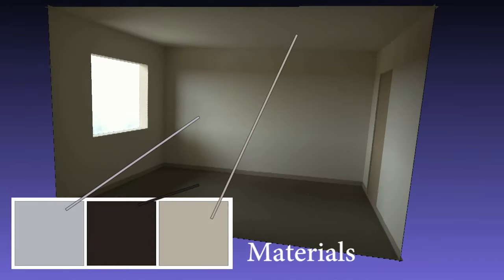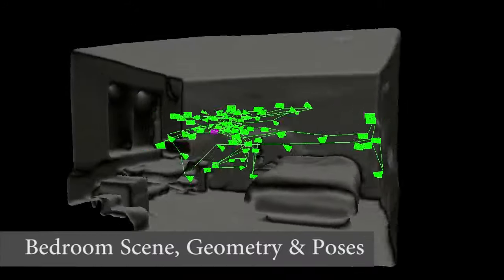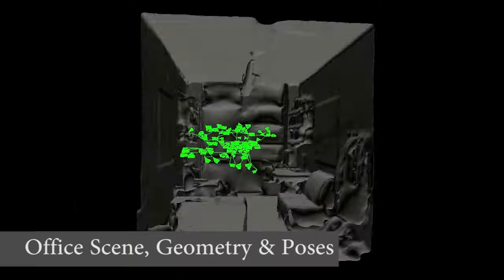Well, you don't have to imagine anymore. Using our system, you can take a handheld scan of an indoor scene and, after some offline processing, directly visualize these changes. Our system takes an RGBD video sequence and produces a complete radiometrically consistent scene model. This model includes semantically meaningful scene geometry, light emitters, and materials.